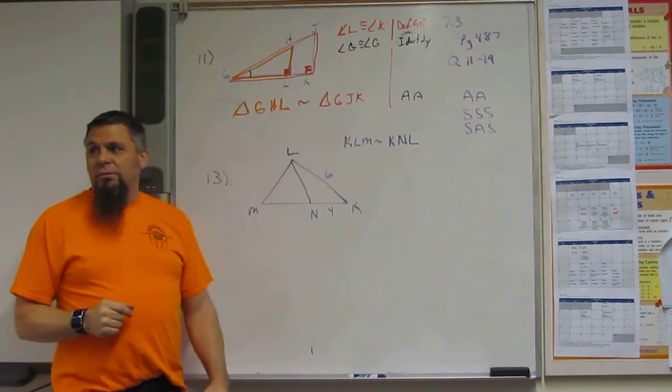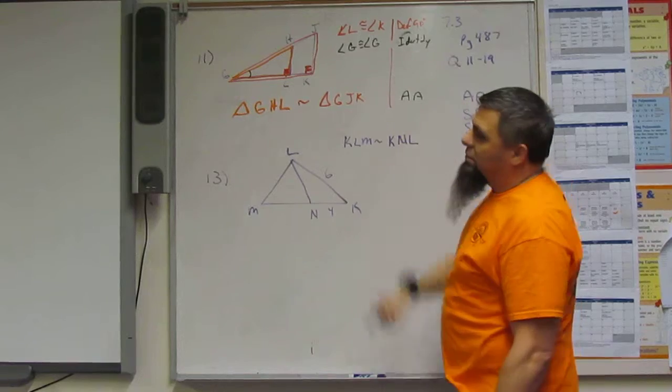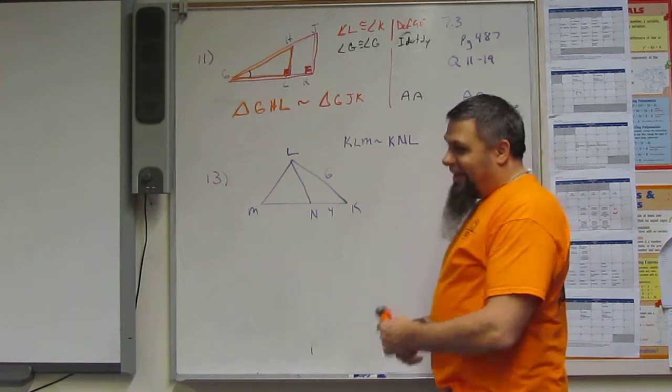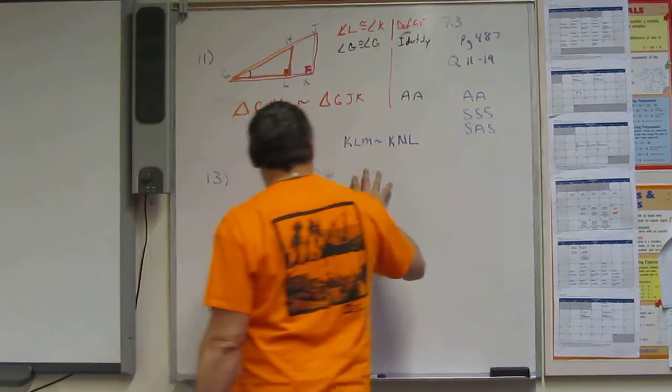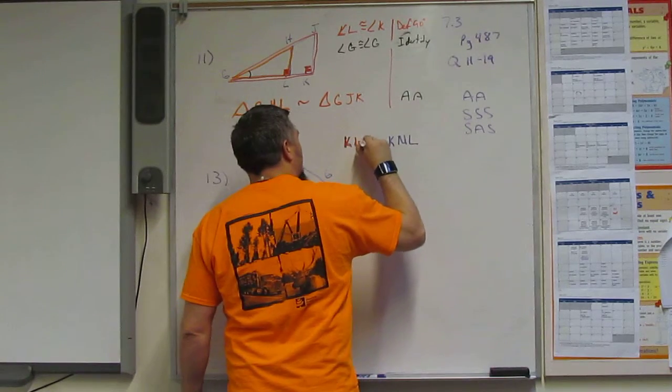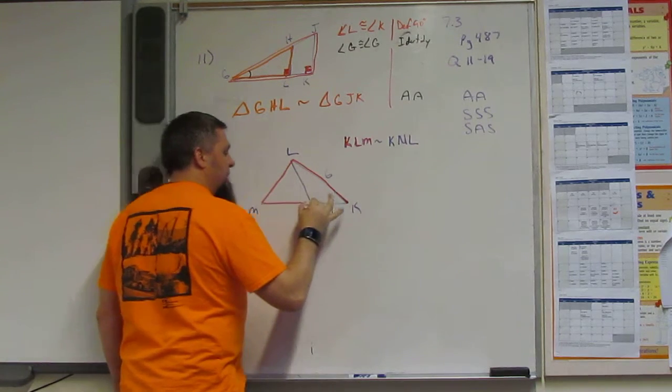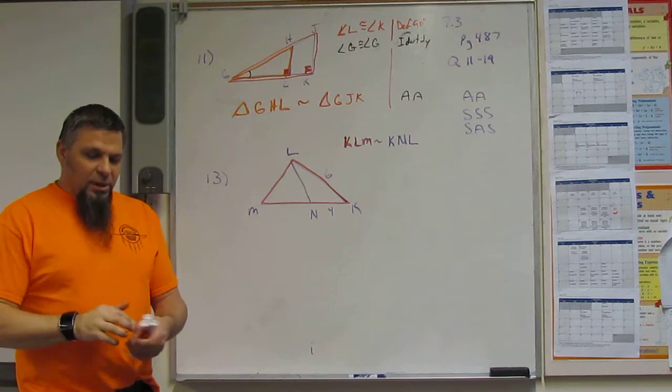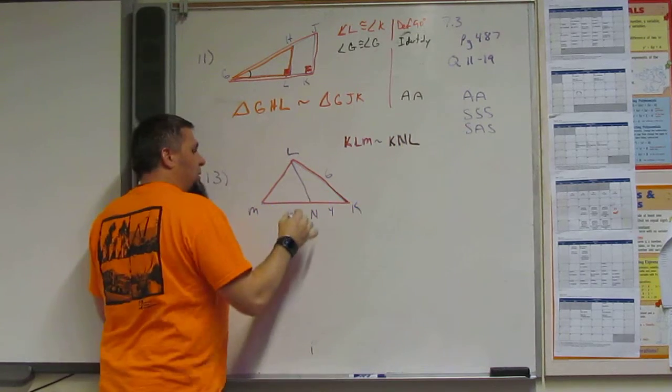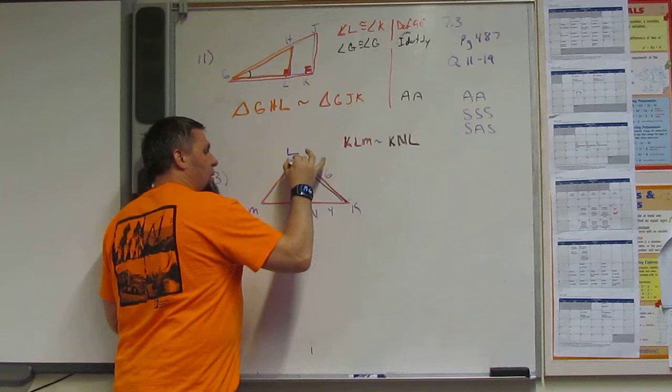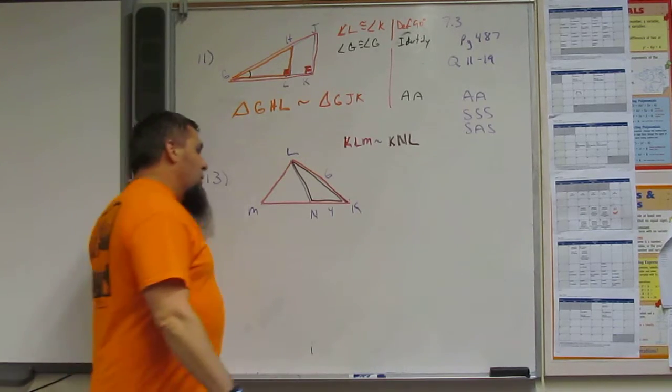What does the top one say? Definition of a 90-degree angle, and then identity. And then we've got this one, KLM. So let's look at KLM as the red one. I'm going to go from K to L to M back to K. And then the brown one, K, N, L.